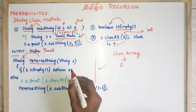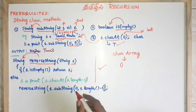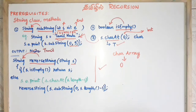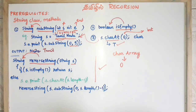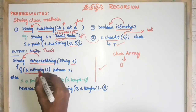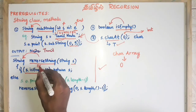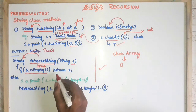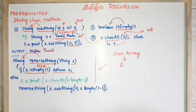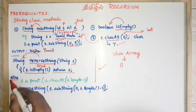In the reverse string program, we use a string parameter. If the string isEmpty returns true, we cannot reverse it — we return. Otherwise, we go to the else part.